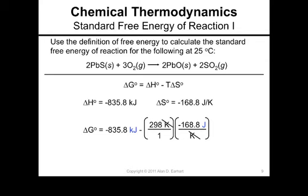Do you see a problem? Well, you should. We've got kilojoules for the enthalpy and we've got joules in the entropy, so we need to get them all in the same units. Let's just put them all in kilojoules, so a thousand joules per kilojoule.